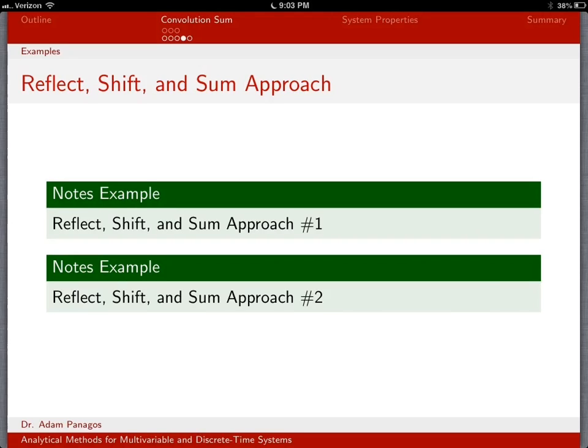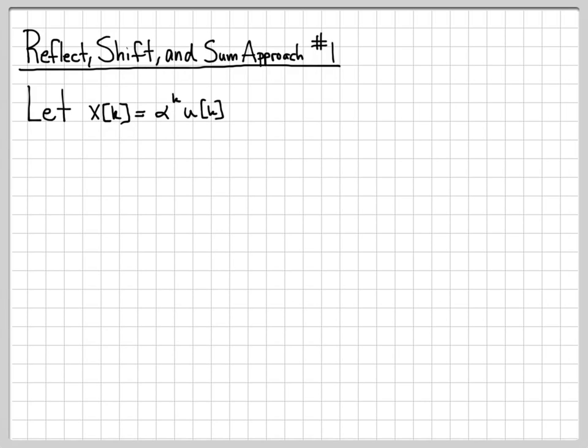So this first one we want to look at, reflect, shift, and sum approach number one. We'll start off with one of the more easier cases we can do. There's only going to be a couple cases that we need to consider. Some of the ones that we'll look at in example number two get a little bit more involved. But for now, let's start off with the signal x[k] = α^k u[k]. And let's assume that α is a real number between 0 and 1.